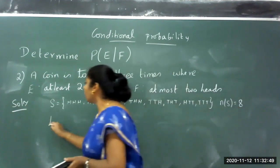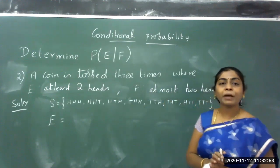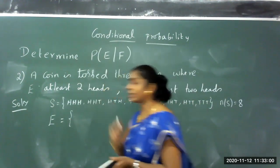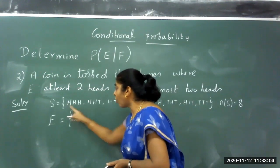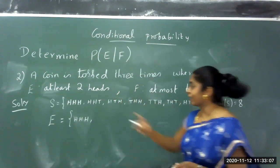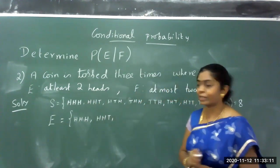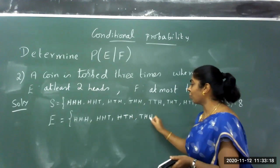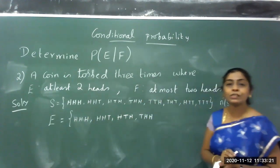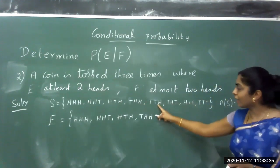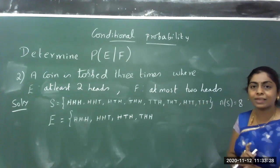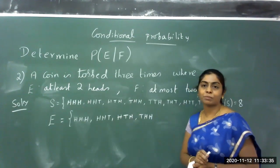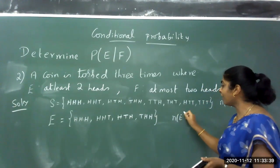Now for event E — at least 2 heads. All 3 heads (HHH) satisfies at least 2, so include it. HHT has 2 heads — include. HTH has 2 heads — include. THH has 2 heads — include. The remaining cases HTT, THT, TTH have only 1 head and don't satisfy the condition. TTT has no head. So at least 2 heads appear in 4 cases. The number of elements in E is 4.